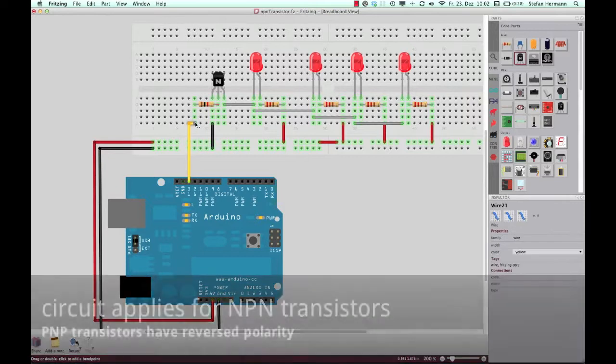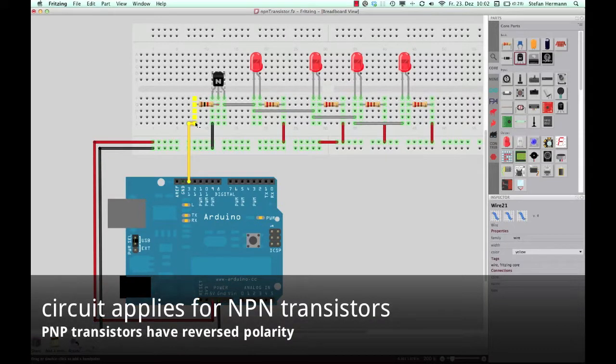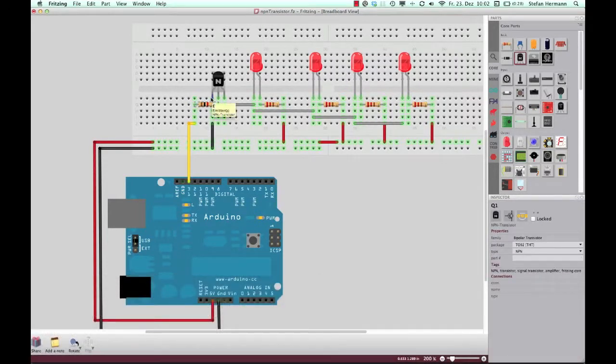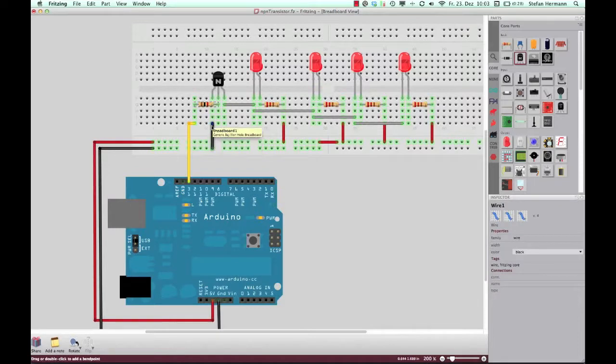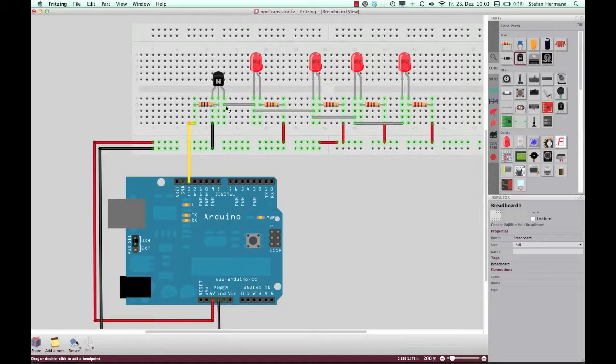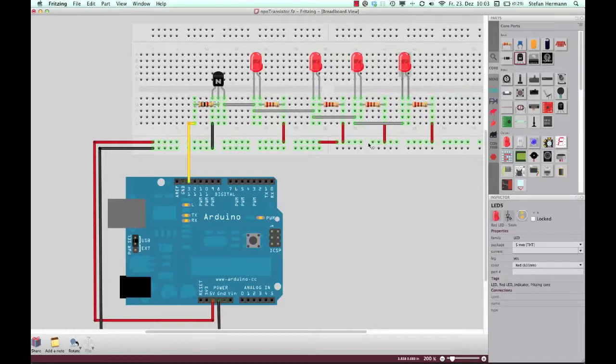There comes a small signal which switches a big signal. There we have the resistor on the base to protect it from too high currents. The emitter side of the transistor is connected to the ground, and the other side is connected to the circuit.